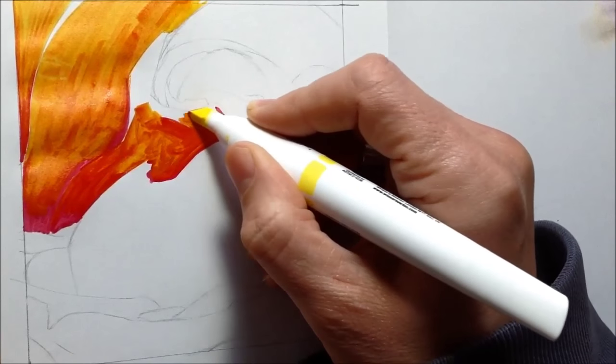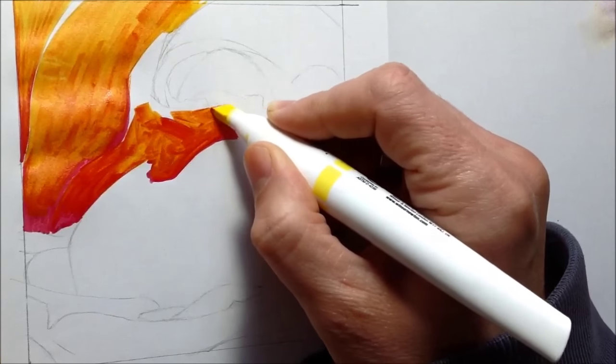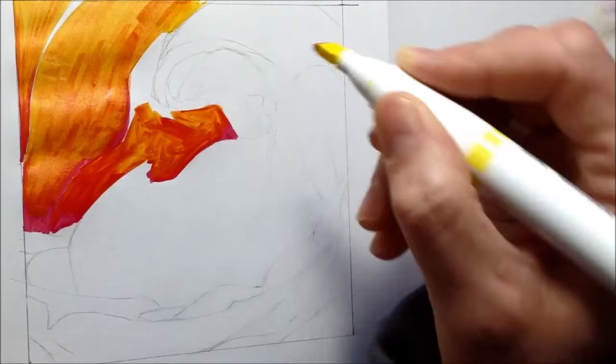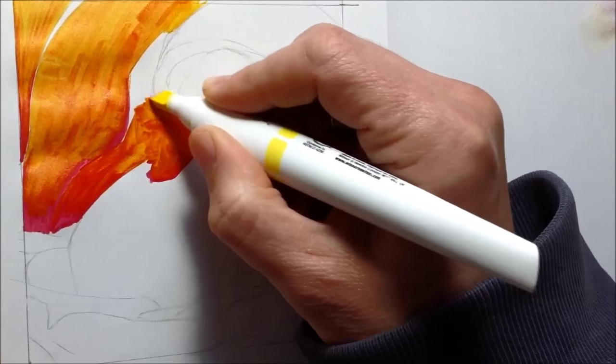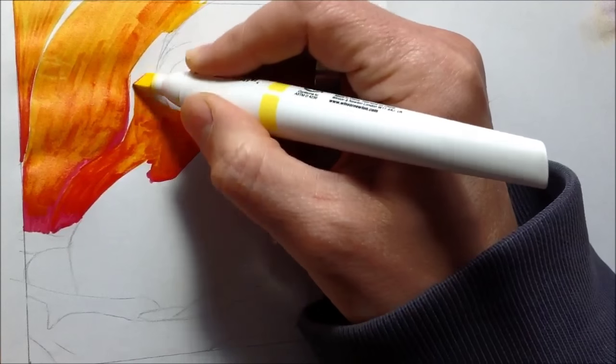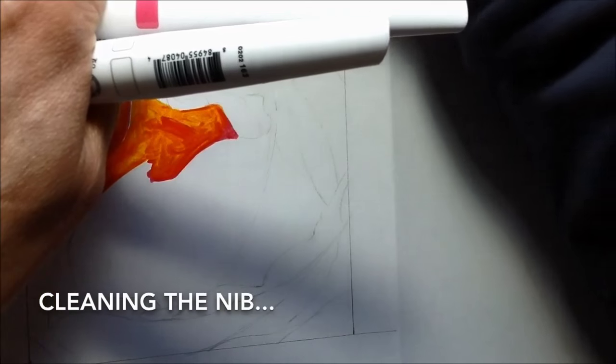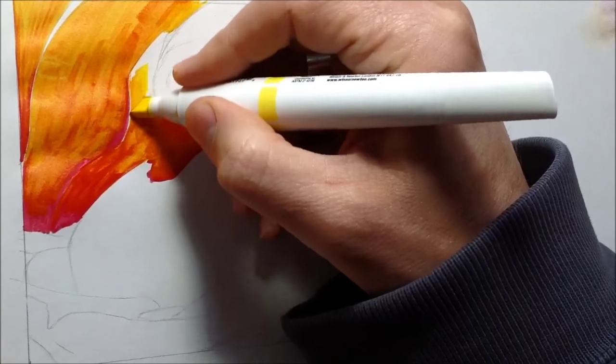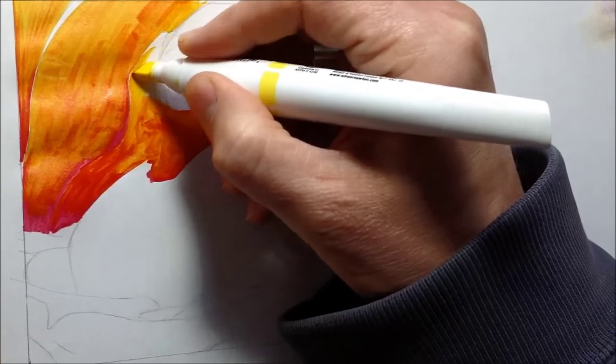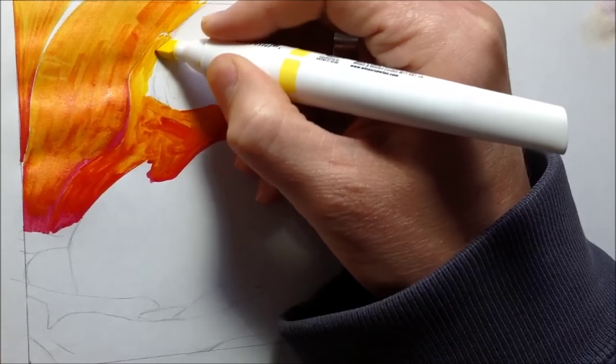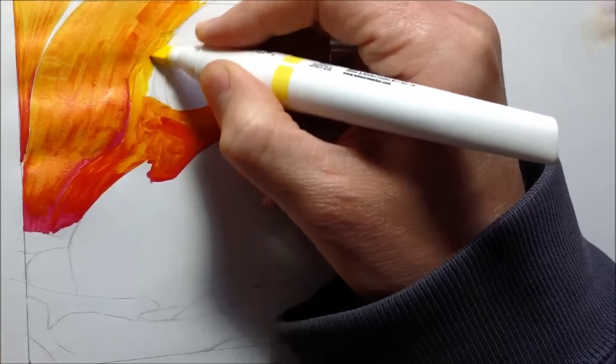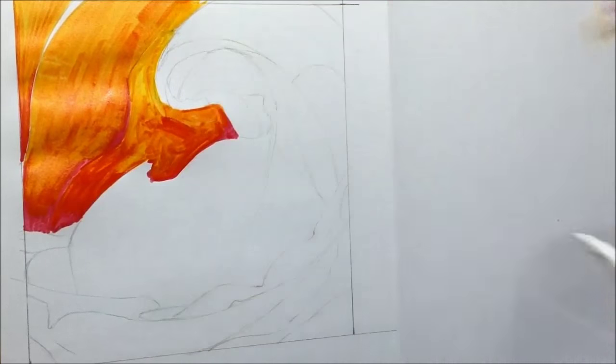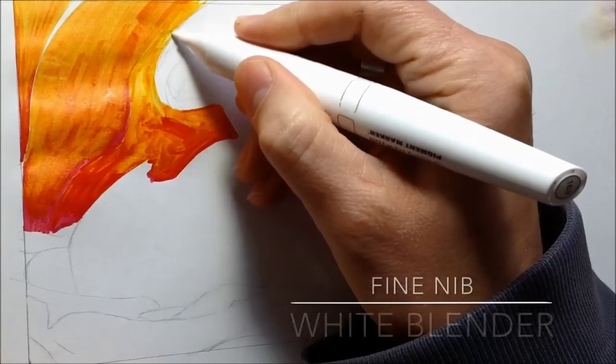Perhaps because I'm using the chisel nib, but also because I'm just getting used to the pen. I would like them to be more flowing. Cleaning the nib here on a spare scrap of paper—you can see it's much brighter yellow when I come back with it, but it gets contaminated with the other colors quite quickly. At this point, I start using the white blender to see if I can put a highlight on this petal.